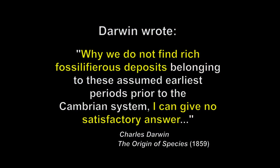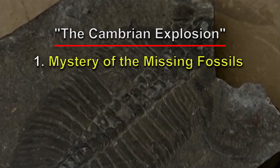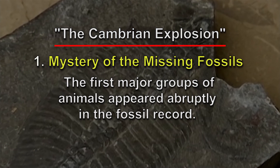We've been talking about a doubt that Darwin had about the adequacy of his own theory, its ability to explain all the evidence. His doubt concerned a major event in the history of life known as the Cambrian Explosion, in which the first major groups of complex animals arose very abruptly in the fossil record. This posed two mysteries unresolved by Darwinian theory. The first I like to call the mystery of the missing fossils, because these animals appear very abruptly in the Cambrian layers.